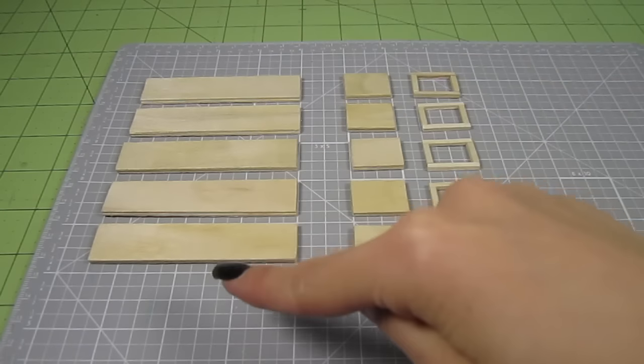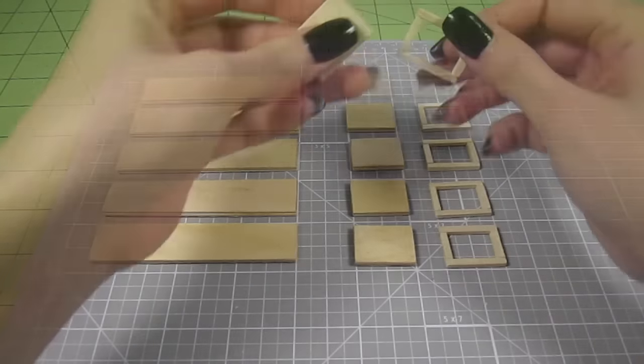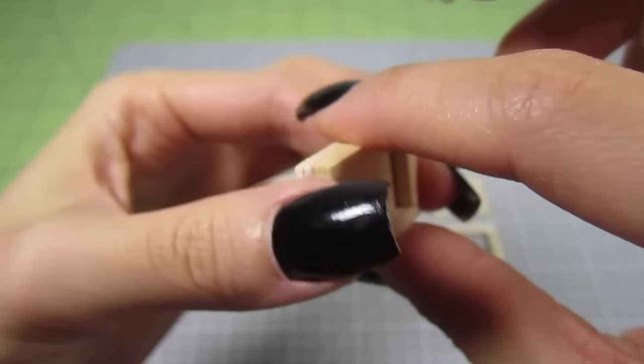So in summary, 5 3.5 inch pieces, 5 1 inch pieces and 5 of these rectangles. Small tip here, the matchstick rectangle should be exactly the same size as the 1 inch pieces you cut from the popsicle stick. Okay, let's stain and paint the wood.